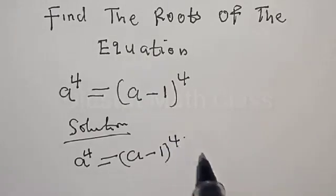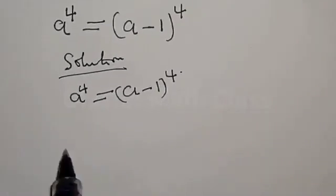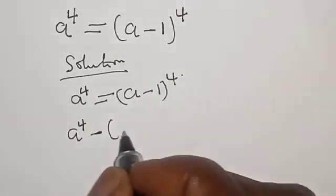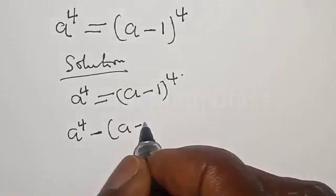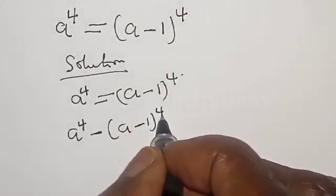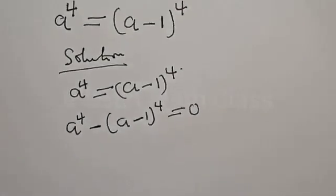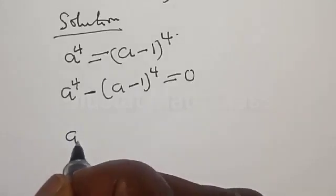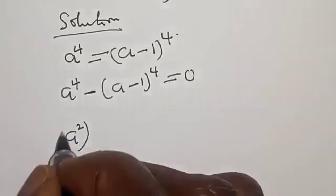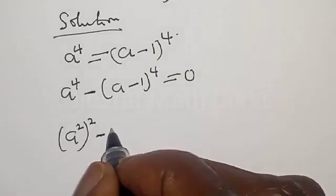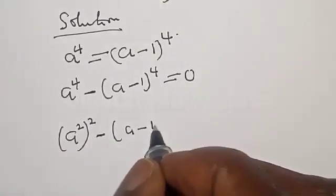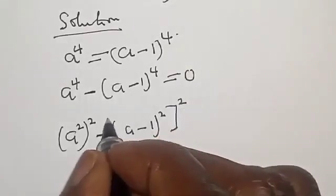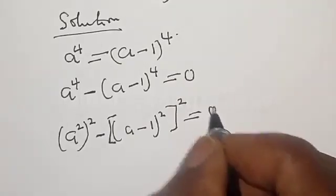We have a⁴ = (a-1)⁴. Then we rearrange: a⁴ minus (a-1)⁴ equals zero. Now remember, a⁴ can be expressed as (a²)² minus (a-1)² all squared, equal to zero.